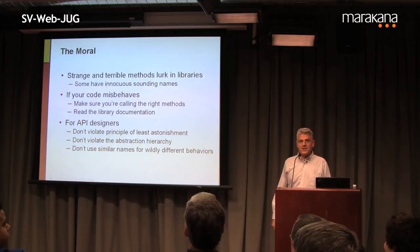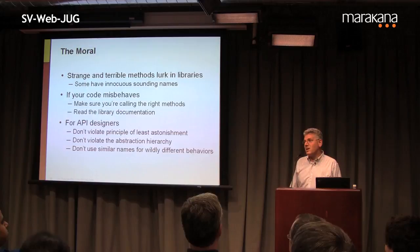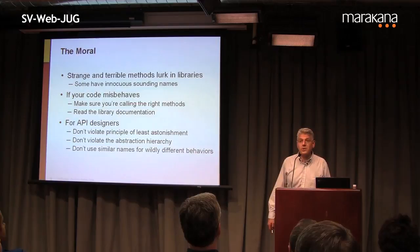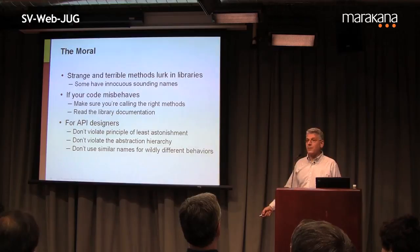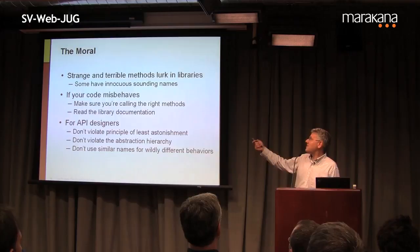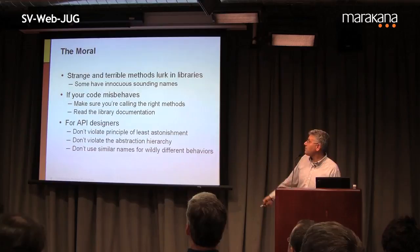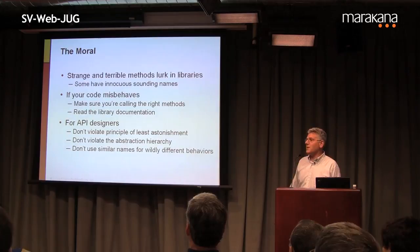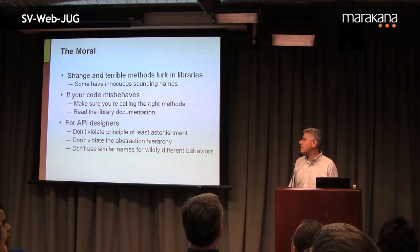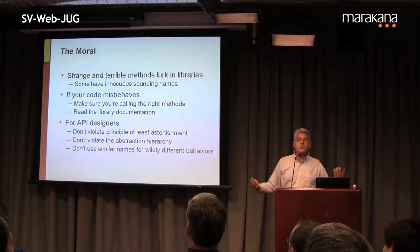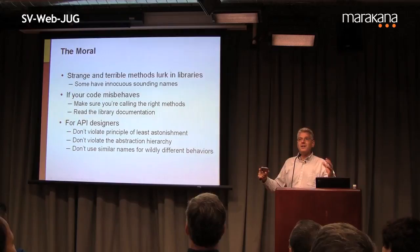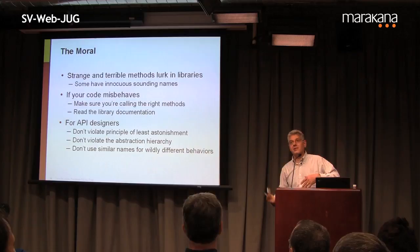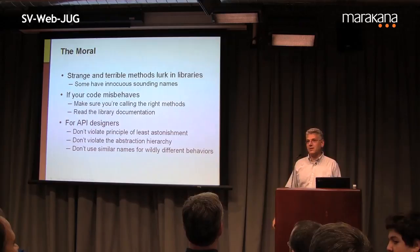The moral: strange and terrible methods lurk in the libraries. There are things in there you're better off not knowing about. I don't know why we didn't deprecate this one years ago — any OpenJDK committers out there, please deprecate those methods. There's one for every type: Integer.getInteger just like Integer.parseInt. If your code misbehaves, make sure you're calling the library methods you think you are. Read the documentation, hover over it in your IDE.